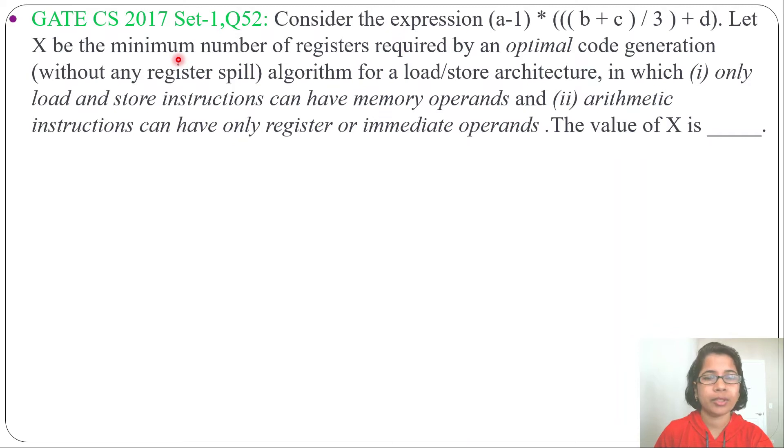Hi, let's solve one previous question of code generation compiler. This question was asked in GATE CS 2017 set 1, question number 52. Consider the expression, let X be the minimum number of registers required by an optimal code generation without any register spill algorithm for load or store architecture in which only load and store instruction can have memory operand. Second rule, arithmetic instruction can have only register or immediate operand. The value of X is.